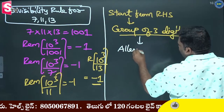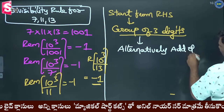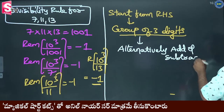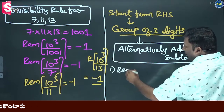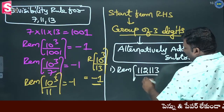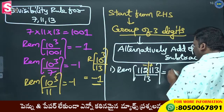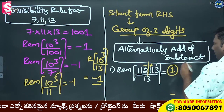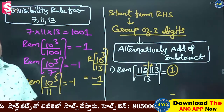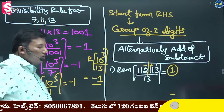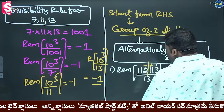Alternatively add and subtract. Example: reminder of 112113 divided by 13. Take a group of 3 digits, alternatively add and subtract: 113 minus 118. Why is there a minus here? Because 118 into 10 cube plus 113, and 10 cube divided by 13 is minus 1. So first the plus, second the minus. Suppose next one: 108108 divided by 7. Take a group of 3 digits, alternatively plus minus: 108 minus 108 minus 108 minus 108. Answer is 0.